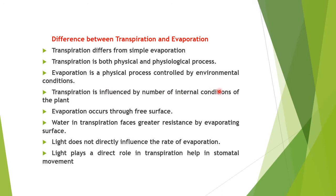Transpiration is influenced by a number of internal conditions of the plant because it has to cross the stomata — it is governed by the anatomy of the plant, whereas evaporation occurs through a free surface. Water in transpiration faces greater resistance by the evaporating surface, which is a complex leaf having an anatomy. Also, in evaporation, light does not directly influence the rate, but in transpiration, light plays a direct role because it helps in stomatal movement — opening and closing of stomata depends upon light.